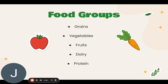Grains are foods made of wheat, rice, oats, cornmeal, barley, or other cereal grains. Examples include bread, pasta, oatmeal, breakfast cereals, tortillas, and grits. Whole grains have the entire grain kernel. Refined grains are processed to remove the grain kernel — for instance, white flour, white bread, and white rice. Refined grains have less dietary fiber than whole grains.